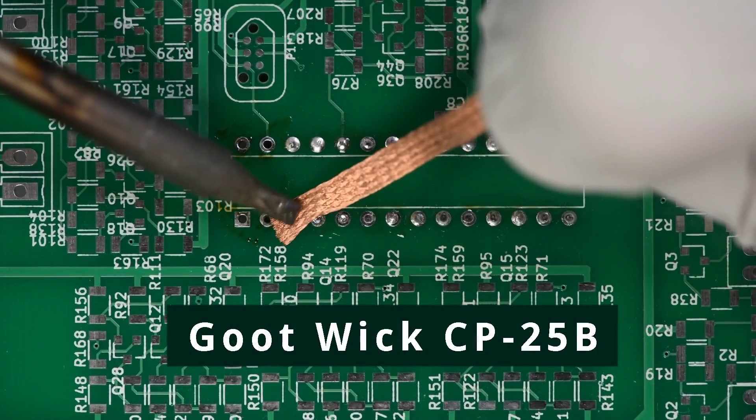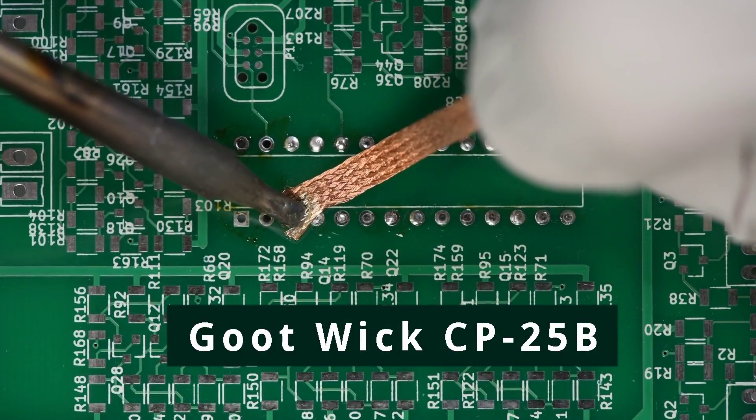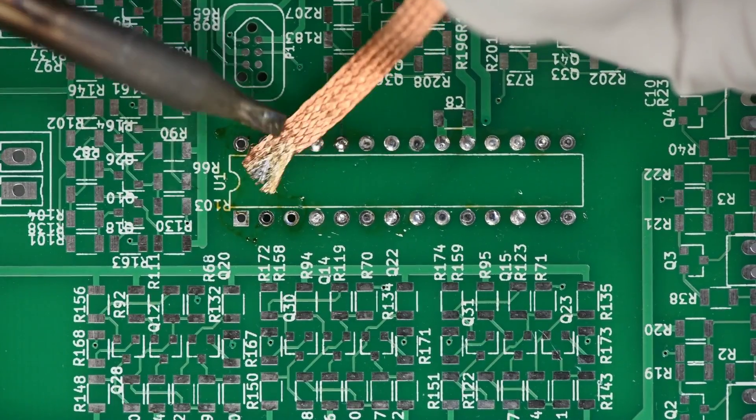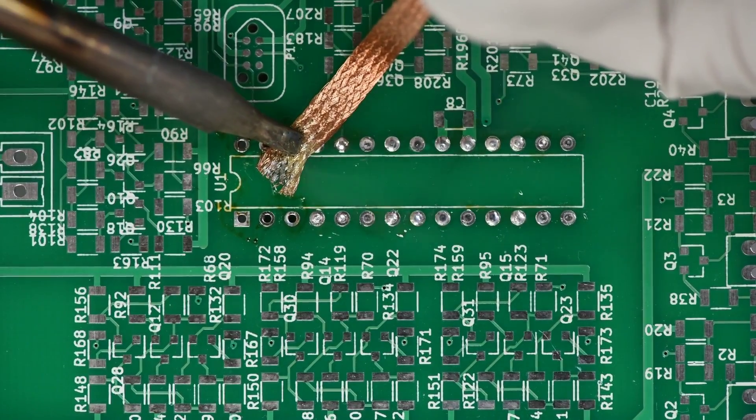Now the GUT wick. This wick seems to be very soft and pliable, but still holds its form quite well. And I really like that. It also seems to hold solder very well.